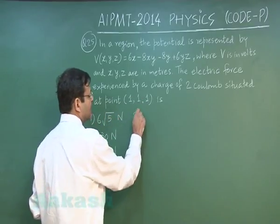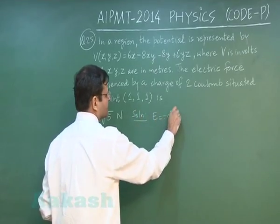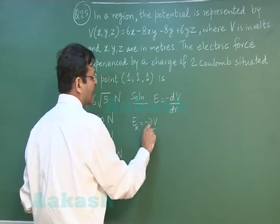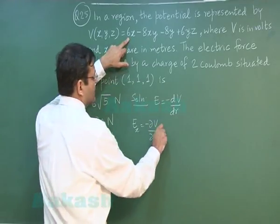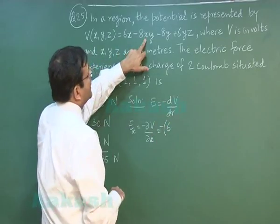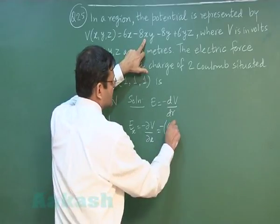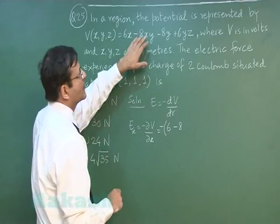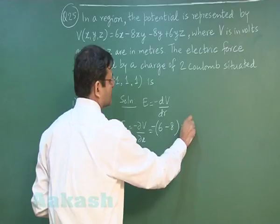Now you see in this question, simply you are using the formula E = -dV/dr. You will be calculating the x component, that will be -∂V/∂x. That means here it will be 6, then differentiated with respect to x, so this will be -8y, so this is -8 because value of y has been given to you equal to 1, and other variables will be differentiated to be 0. So that gives you the value 2.